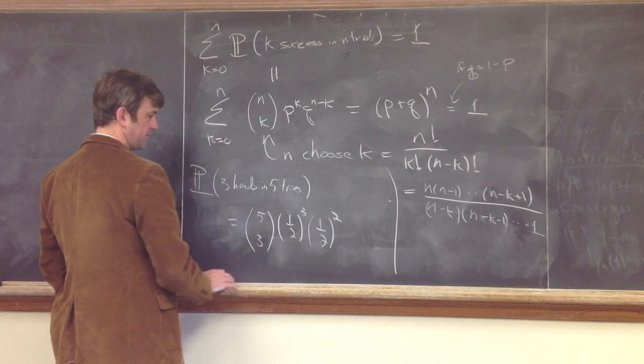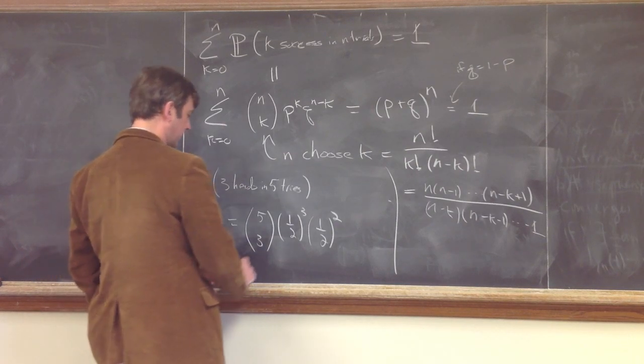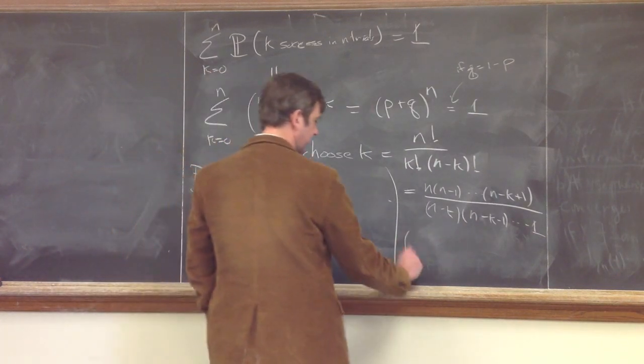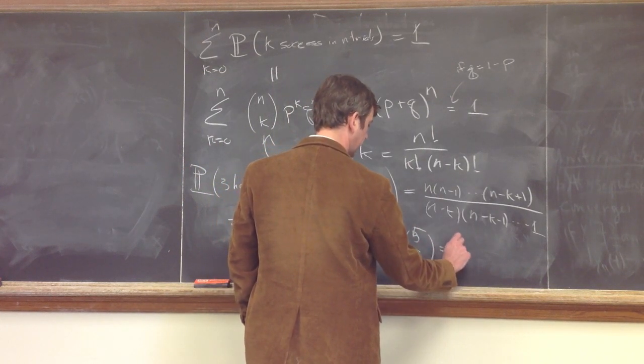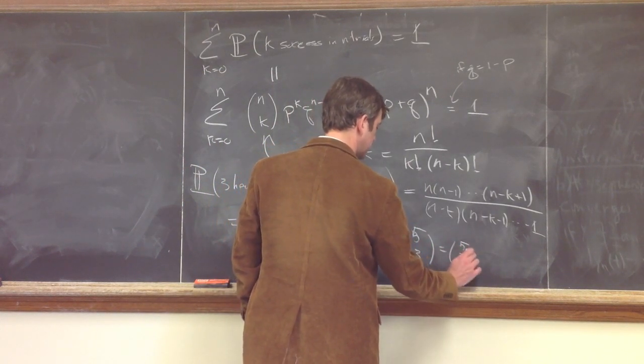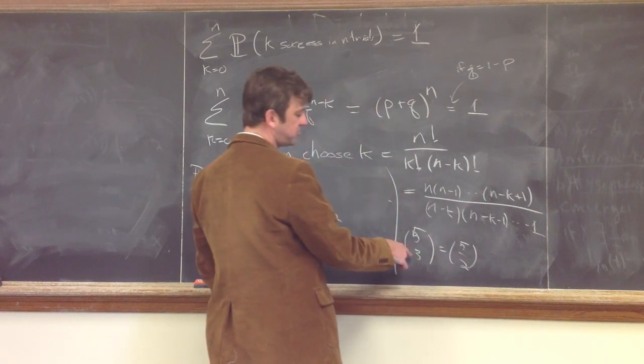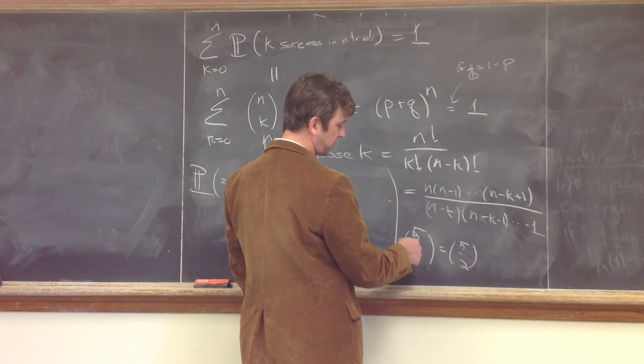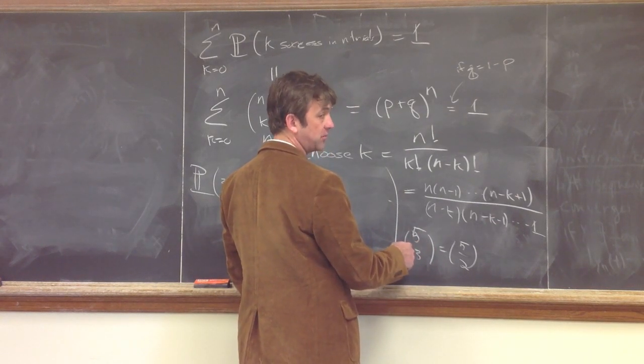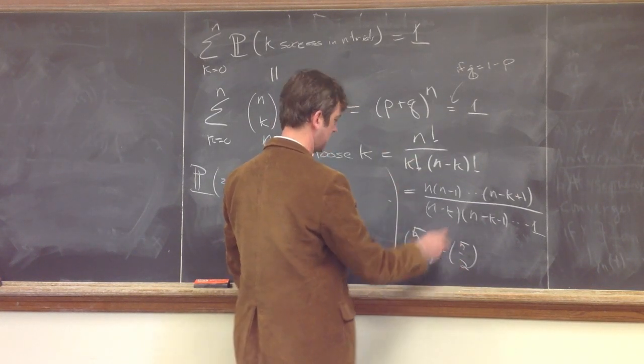And notice, it's not hard to see, but 5 choose 3 is in fact equal to 5 choose 2, because once you've chosen, this is the way to choose 3 objects out of 5, and once you've chosen 3, it's the same as choosing, deciding which 2 not to choose.